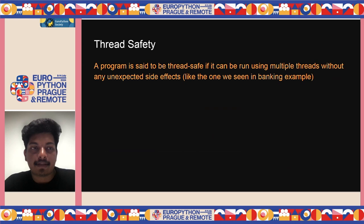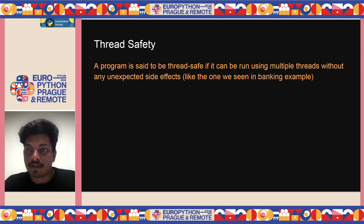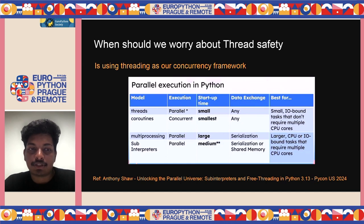A program is said to be thread safe if it can run using multiple threads without unexpected side effects. If multiple threads execute the same process on the same resource and still get consistent results without corrupting each other's data, you have a thread safe program. There are multiple ways of achieving concurrency — threads, coroutines, multiprocessing, and sub-interpreters, as Anthony Shaw discussed in his talk 'Unlocking the Parallel Universe.'